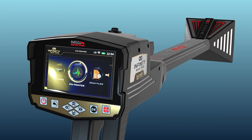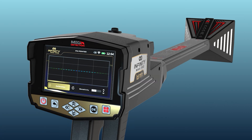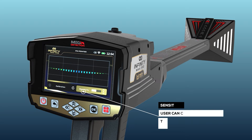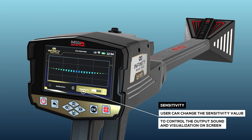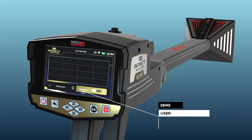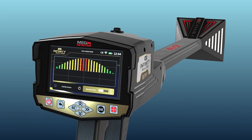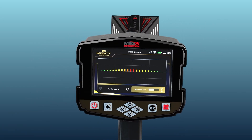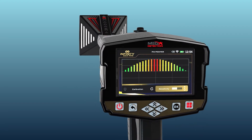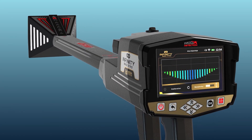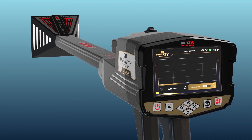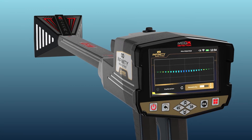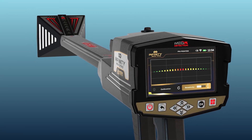After the selection, a Pinpointer System screen will appear, which includes the following elements. Sensitivity: during the search process and according to the target scan, the device will make a special sound tone with a graphical presentation on the screen that represents the presence of the target underground. The user can change the sensitivity value at any time to control the output sound and visualization on screen.